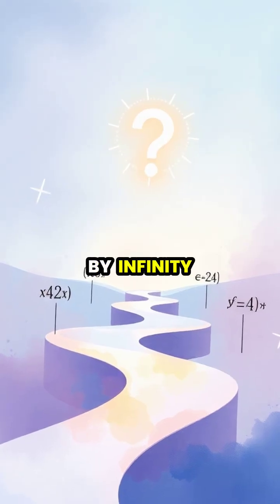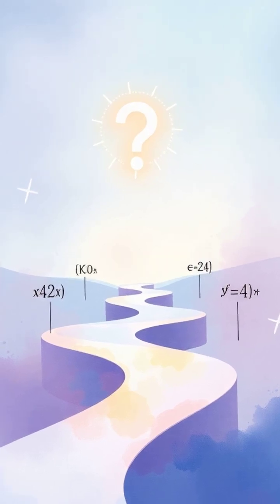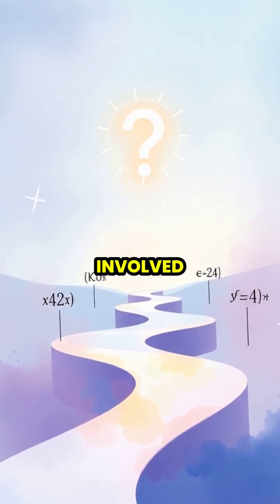Infinity divided by infinity is what mathematicians call an indeterminate form, because its value depends entirely on the specific functions involved.